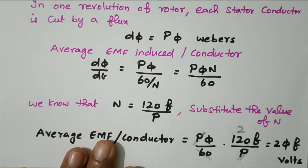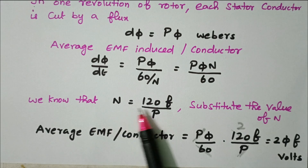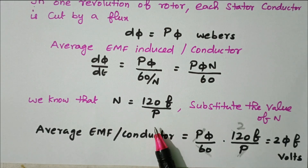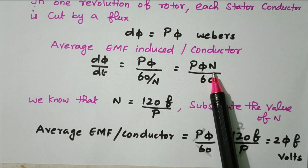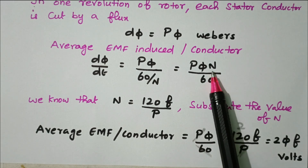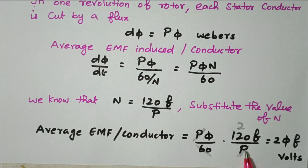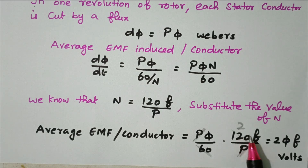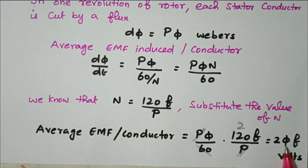Now we substitute the value of N. We know that synchronous speed N = 120f/P. Substituting into the expression: (P × Φ / 60) × (120f/P). Here, P cancels and 60 goes into 120 twice, giving 2fΦ. So the average EMF induced per conductor is 2fΦ volts.